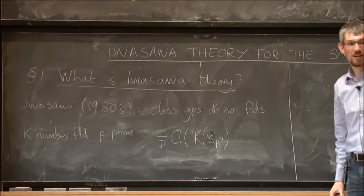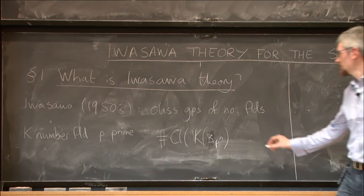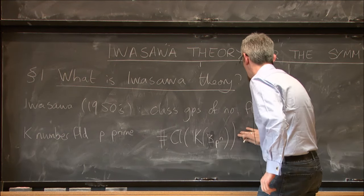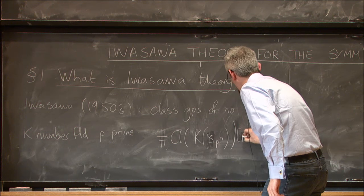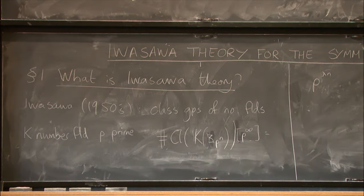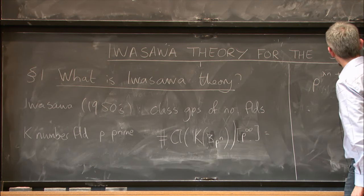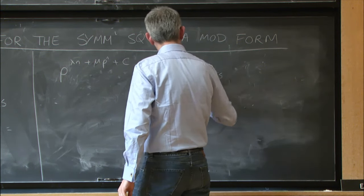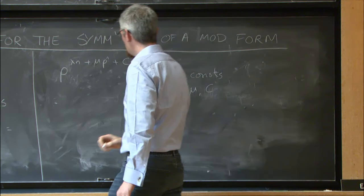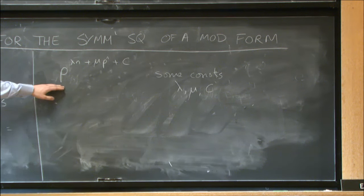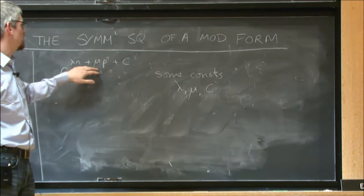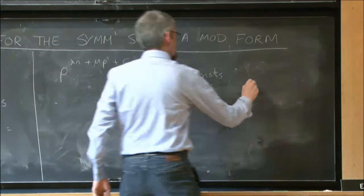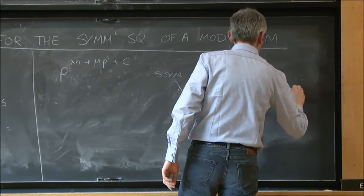So if you take any number field K, we maybe can't say very much about the size of the class group of K. Let's choose a prime and just look at the P part. But if you join more and more P-powered roots of unity to K, if you get a very regular behavior. So for some constants, the power of P dividing the class number is given by lambda n plus mu P to the n plus constant, for all sufficiently large n.